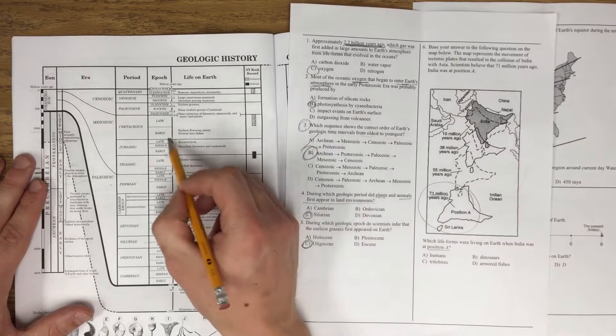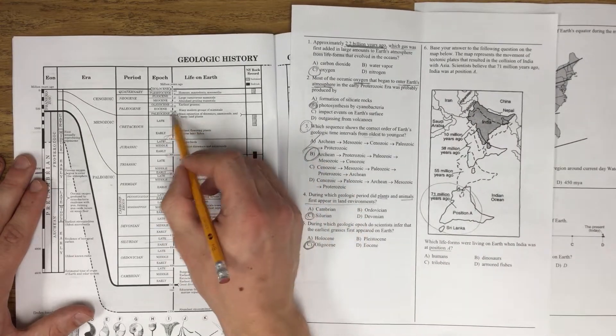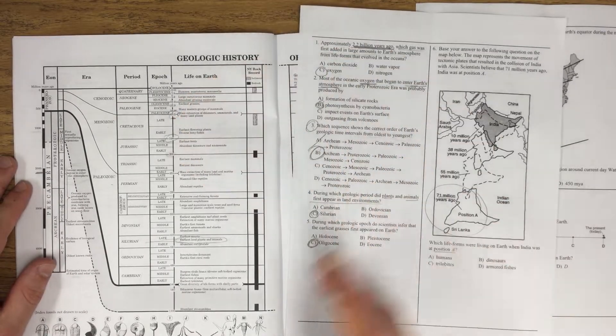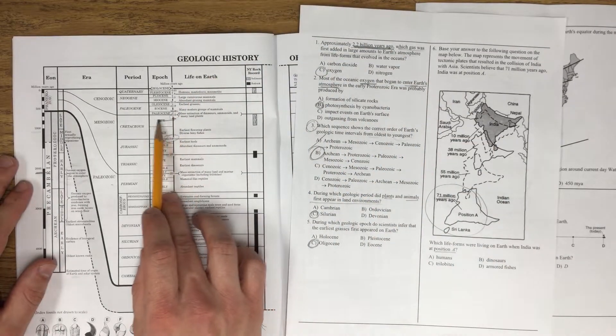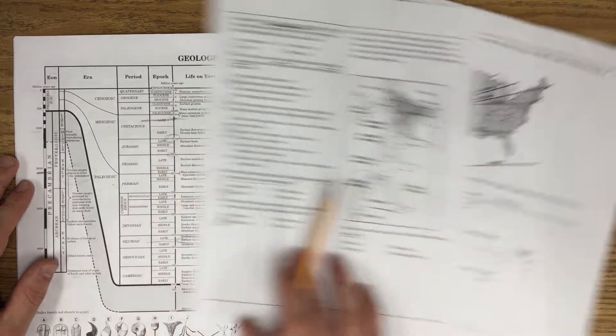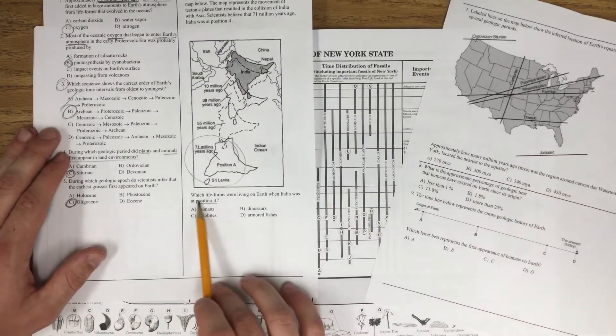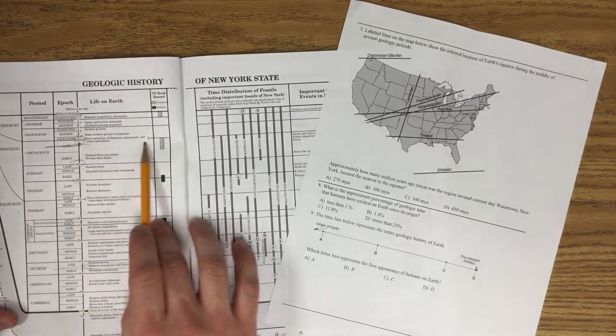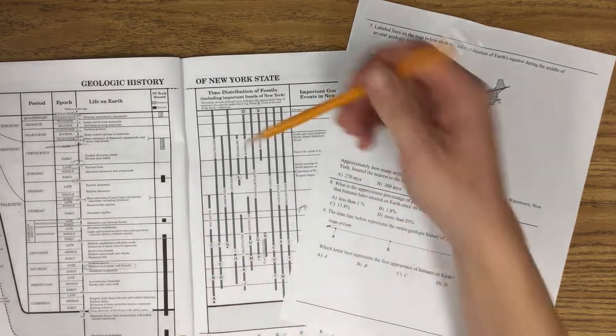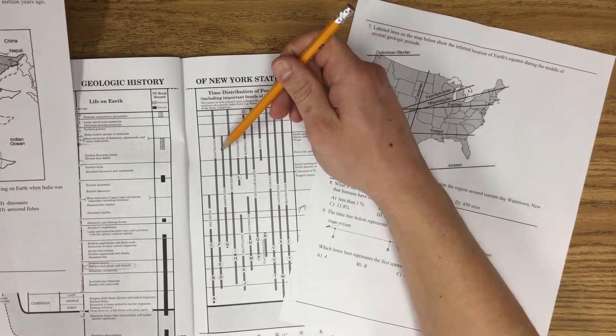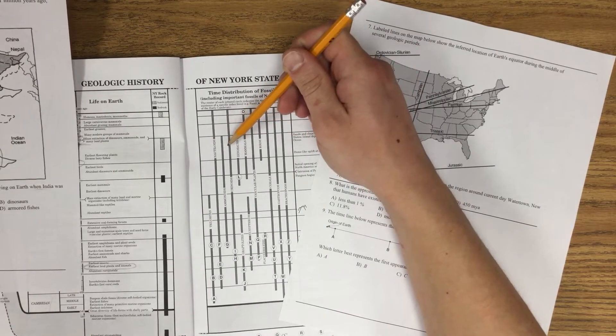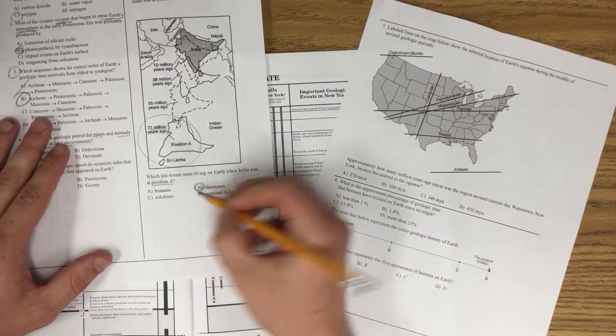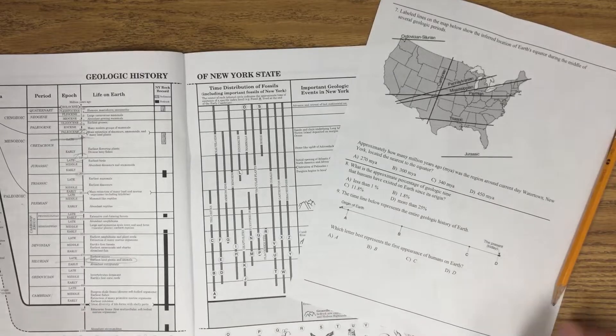I don't see 71, but I know 71 falls between 146 and 65. Which number is it closest to? 71 is definitely closest to 65. So if I read over, it's going to be in the Cretaceous. But what's it saying? Which life forms were living on Earth at position A? Let me read all the way over to here. Nautiloids. Ammonoids. Crinoids. Dinosaurs. Here's dinosaurs. Dinosaurs were alive 71 million years ago.